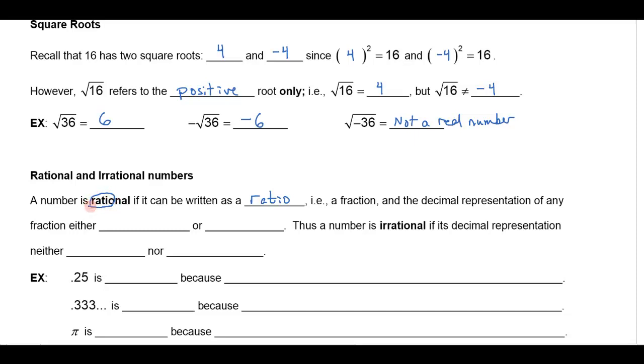And ratio has to do with fractions, so a rational number is any number that can be written as a fraction. And the decimal representation of any fraction either terminates or it repeats. In fact any decimal number that terminates or repeats can be shown to be equal to a fraction.